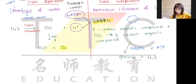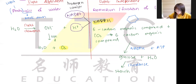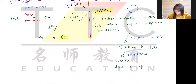Glucose in plants is converted to starch through condensation — a condensation reaction forms polysaccharides. Glucose is a monosaccharide, and starch is a polysaccharide. The starch is then stored in the stroma of the chloroplast.